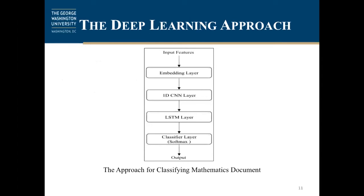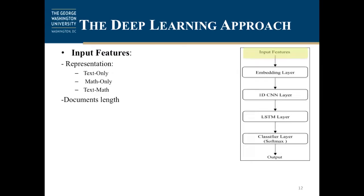This slide shows the architecture of our model. It's very simple — it has four layers: starting with an embedding layer, then a one-dimensional convolutional network layer, an LSTM layer, and ending with a classification layer using Softmax. The model starts by feeding the embedding layer with the input features. For each document in our dataset, we produced three different formats: text only, math only, and text plus math. These are fed to the embedding layer.